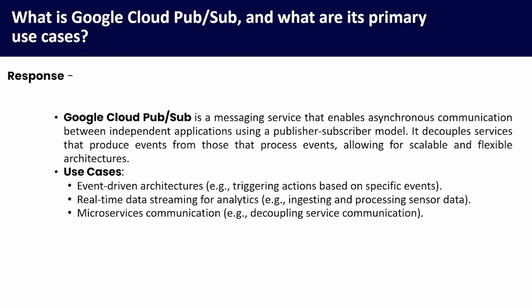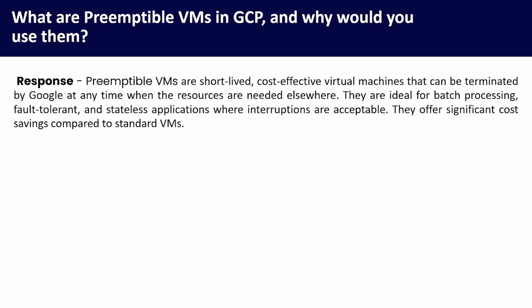What is Google Cloud Pub/Sub and what are its primary use cases? Google Cloud Pub/Sub is a messaging service that enables asynchronous communication between independent applications using a publisher-subscriber model. It decouples services that produce events from those that process events, allowing for scalable and flexible architecture. Use cases include event-driven architecture (triggering actions based on specific events), real-time data streaming for analytics (for example, ingesting and processing sensor data), and microservices communication (decoupling service-to-service communication).